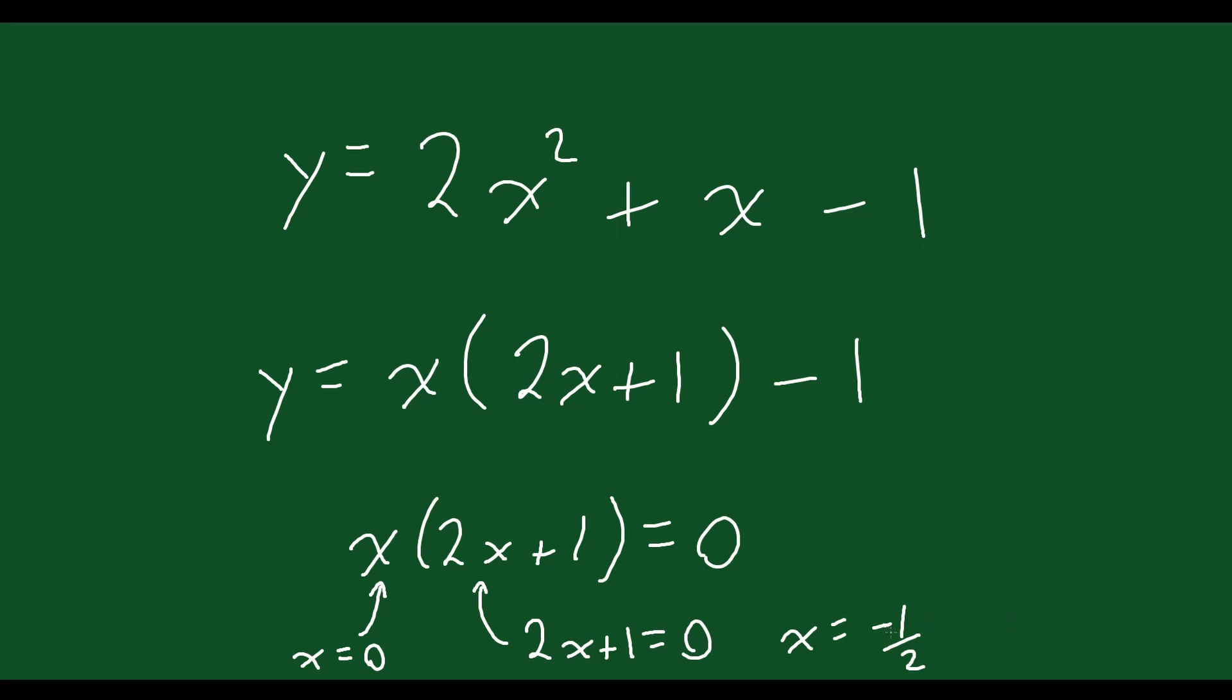So we have two x values here, 0 and negative 1 half. Now what can we do with these? What do they mean? Well, recall, when we plug these values of x in, this part becomes 0. And so if that part becomes 0, then your y value becomes negative 1.